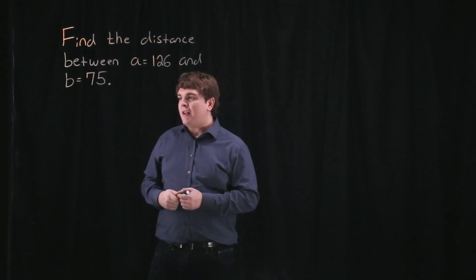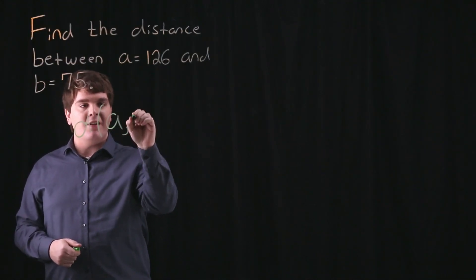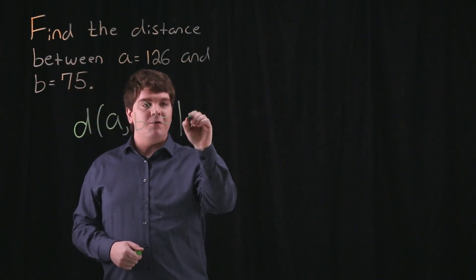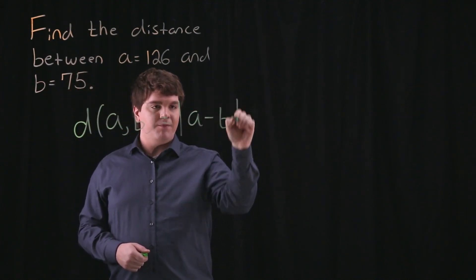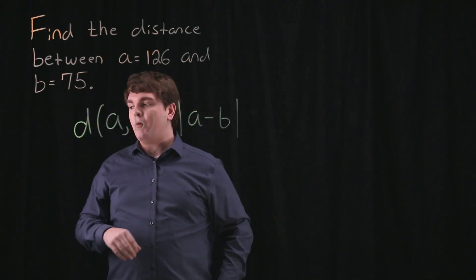Before we begin, let's make a few quick notes. Recall that the distance between any two points, A and B, is equal to the absolute value of A minus B. Now, we can use this formula here to answer our question.